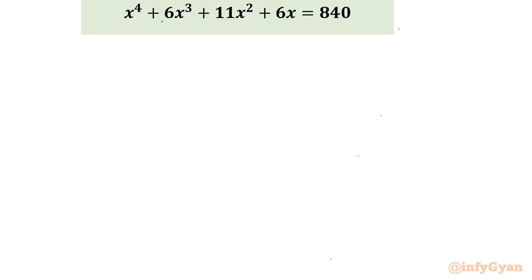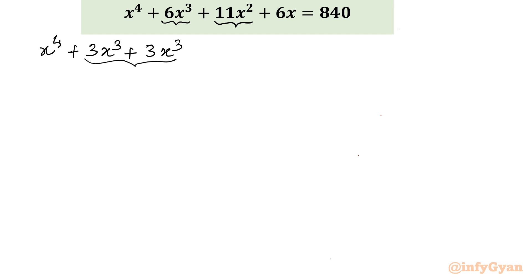I am going to split 6 as well as 11. So let me write our quartic equation: x⁴ + 3x³ + 3x³ — that is 6x³ — then 11x², which I will write as 9x² + 2x², so that is 11x², plus 6x, unchanged, equal to 840.